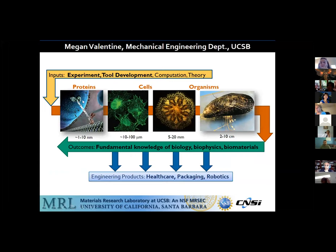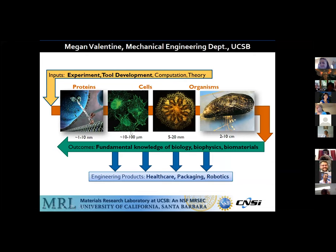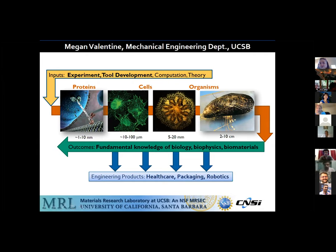Our ability to design and control these types of materials is really useful both to understand the underlying mechanics of natural tissues, and to draw inspiration from that to create artificial tissues — that's what we'll talk about in the second part. In terms of biological systems, my lab has spanned length scales from proteins to organisms. The core part of my lab is experiment, with computation and theory typically in collaboration. The outcomes are both fundamental knowledge of biology and biophysics, but increasingly translating that into engineering products for healthcare, packaging, and robotics.